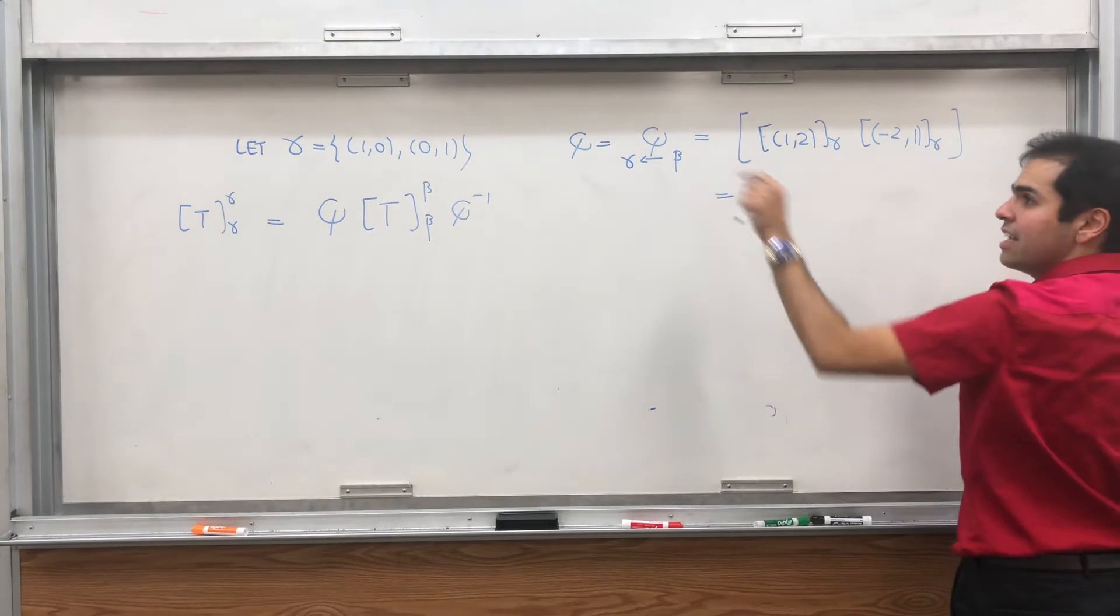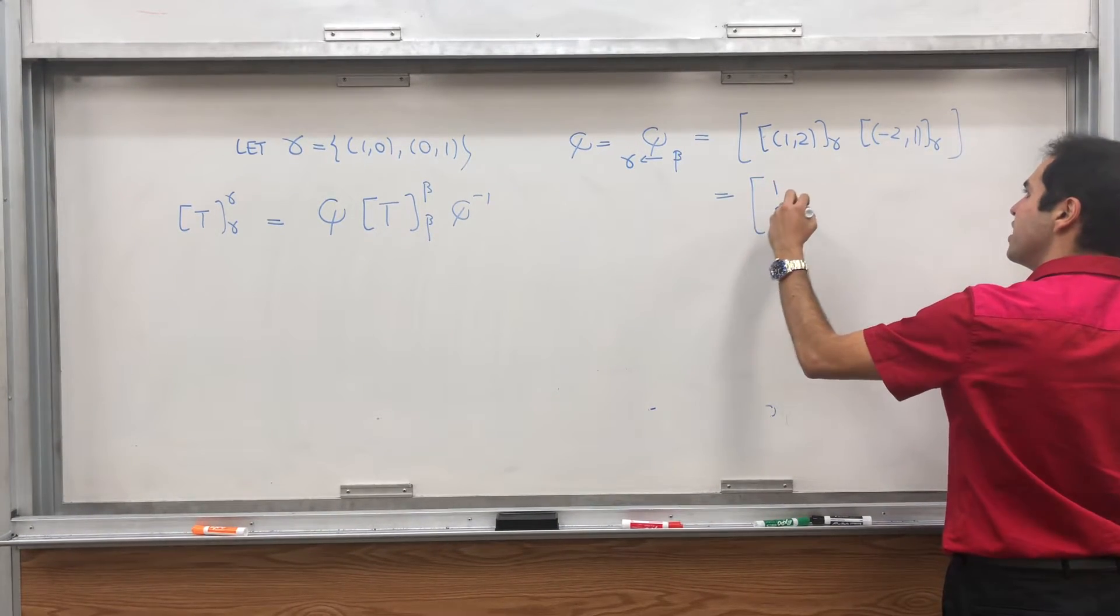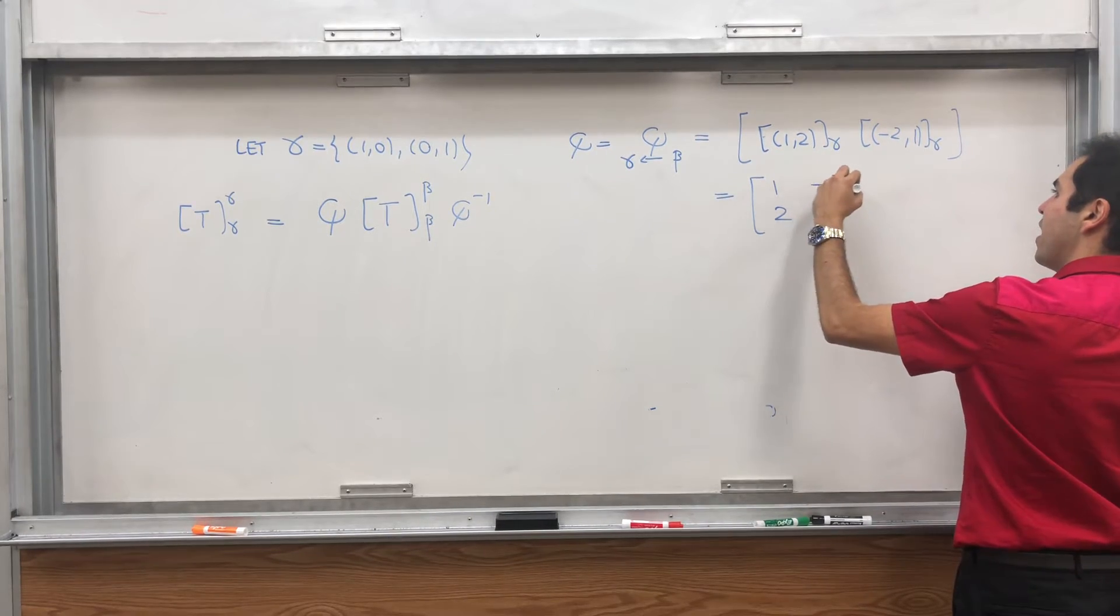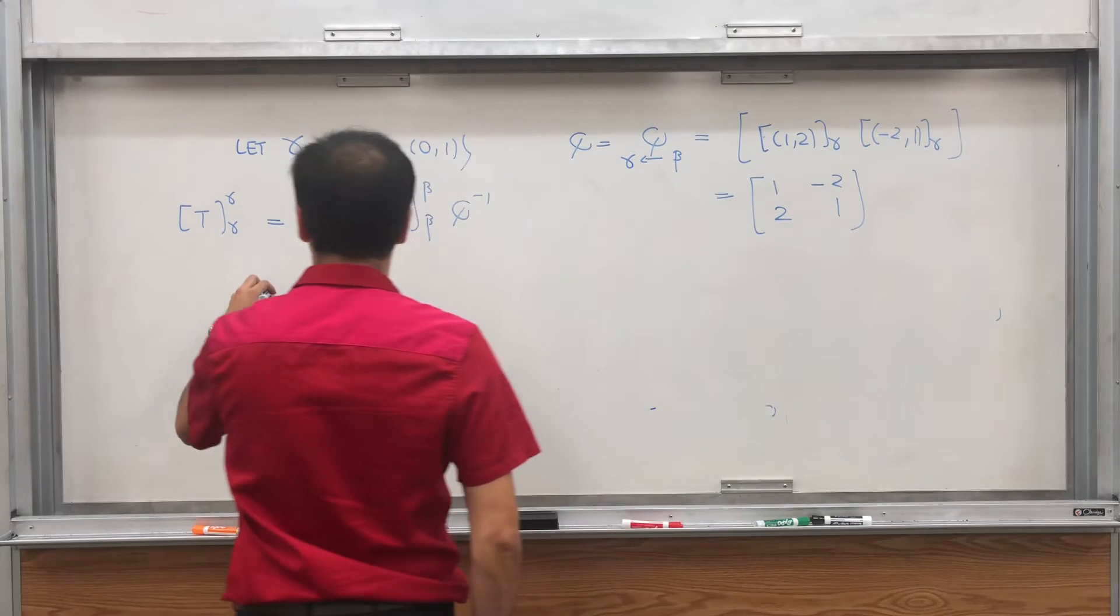we have 1, 2, it's 1 times 1, 0, plus 2 times 0, 1, so we get 1, 2, and then minus 2, 1.